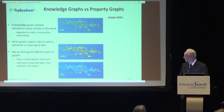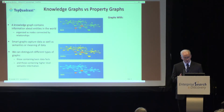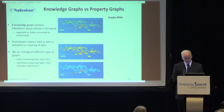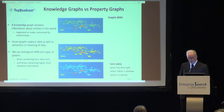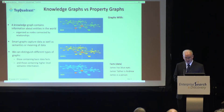We see them in the bottom layer here, but we add to these facts models in the form of ontologies and then rules. To illustrate what this is about, we'll use a very simple fact graph with three triples — three pieces of knowledge.